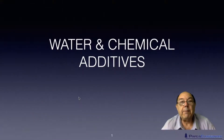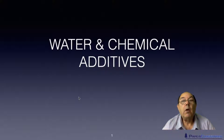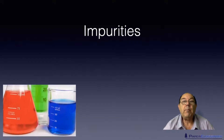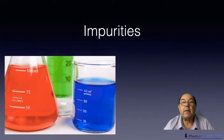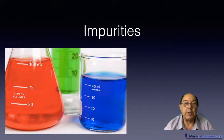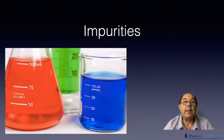Hi, I'm Steve Mann and this is Paper Classroom. Welcome to another one of our water and chemical additives tutorials. In this particular tutorial we're going to be talking about impurities that we find in incoming raw water and the problems that they cause in the process and the final sheet.